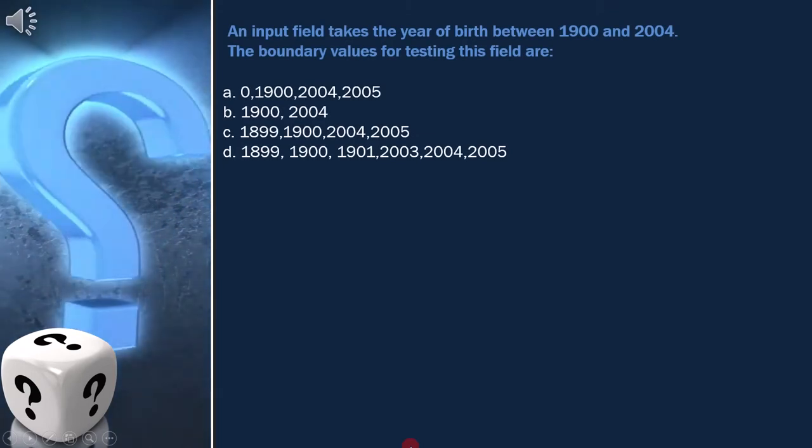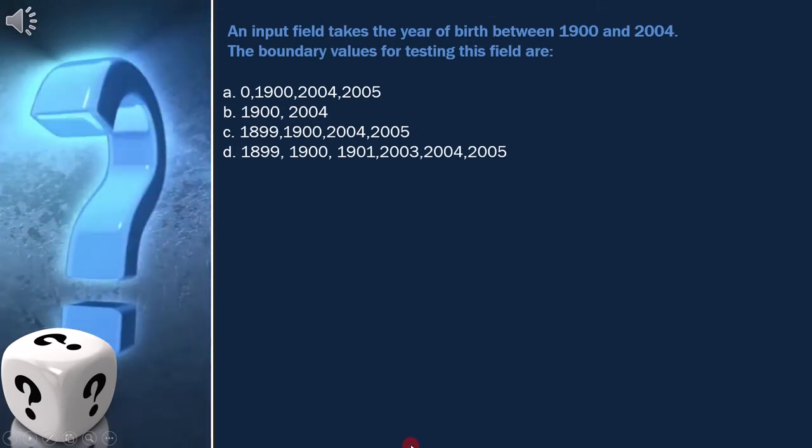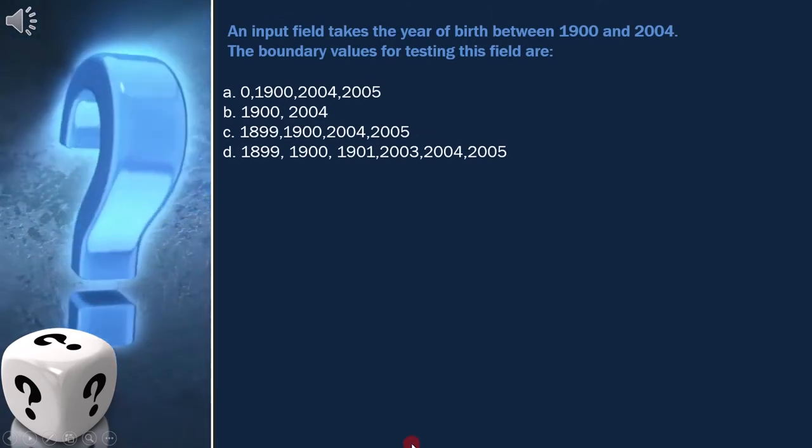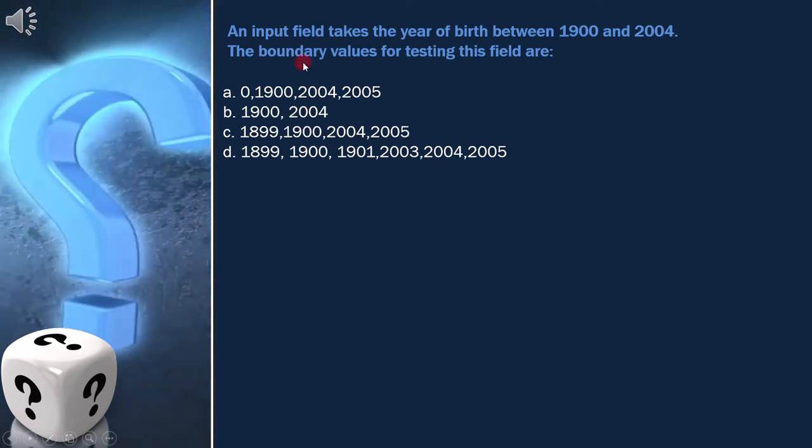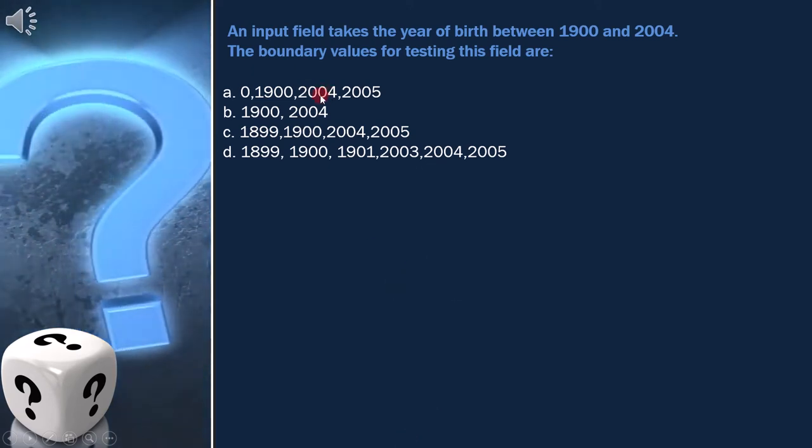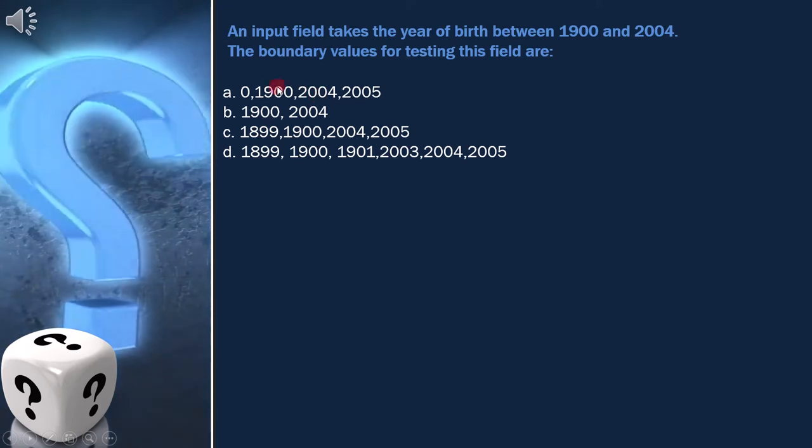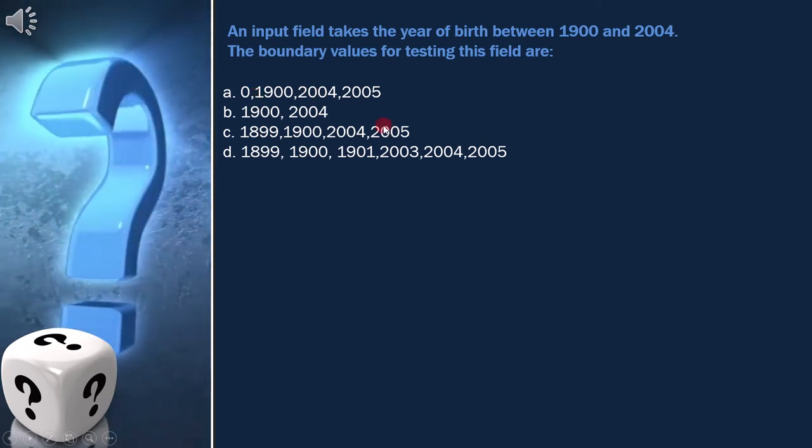Here the question is, an input field takes the year of birth between 1900 and 2004. The boundary values for testing this field are, and these are the options.